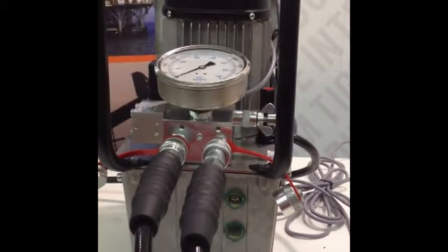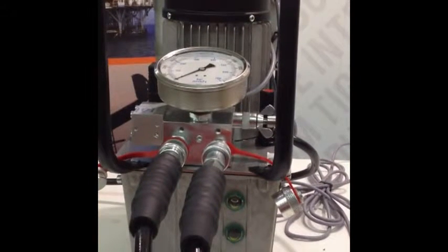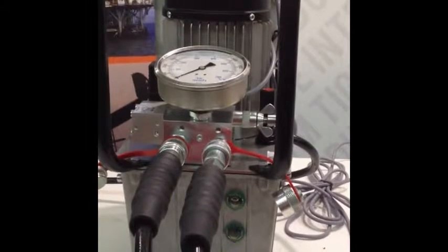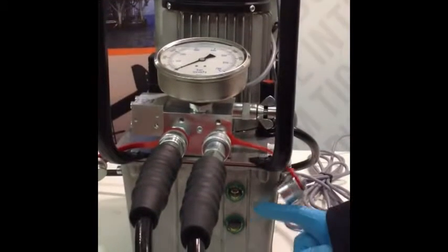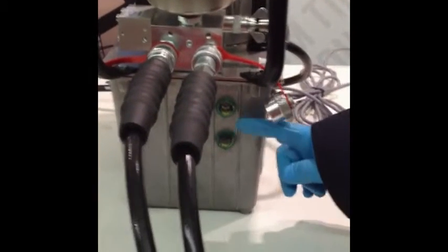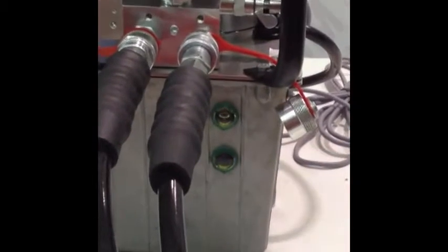We will now demonstrate how to operate our high flow hydraulic pump. First, ensure there is adequate hydraulic fluid in the reservoir by checking the viewing windows. You should see hydraulic fluid in both viewing windows.